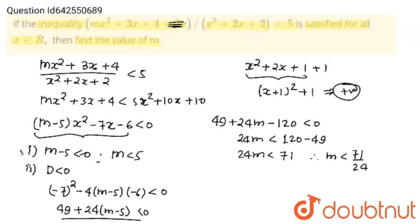And both should be true. Now I am going to take intersection of both. This is minus infinity to infinity, m is less than 5. So this is 5, and 71 upon 24 will be less than 5, around 2 point something. So this is 71 upon 24.